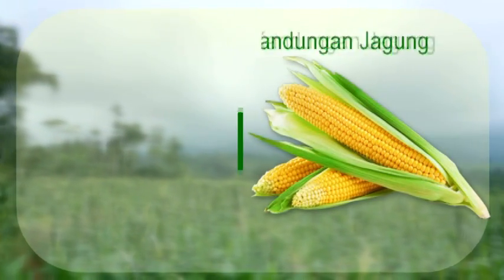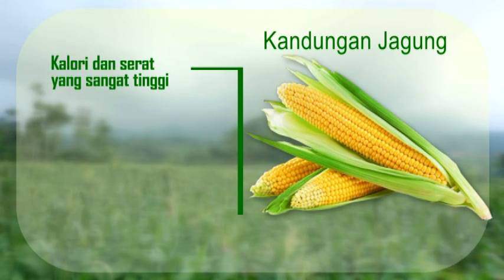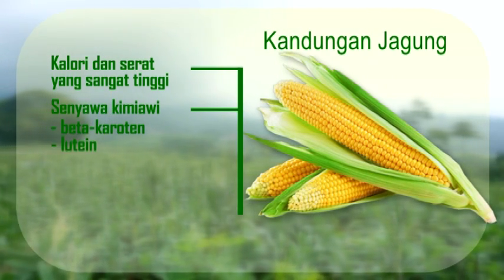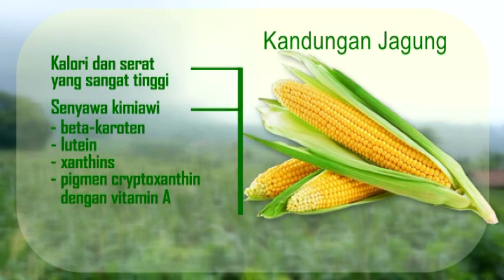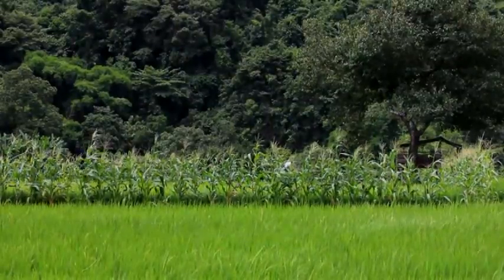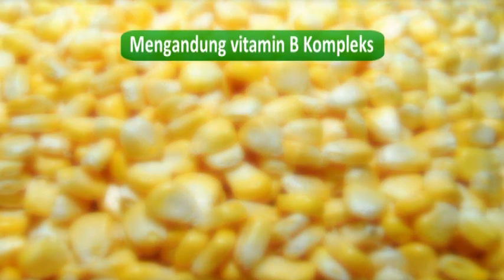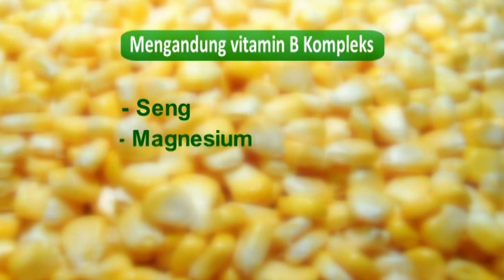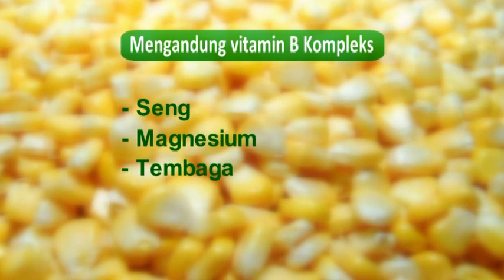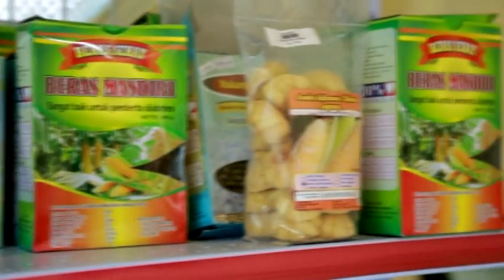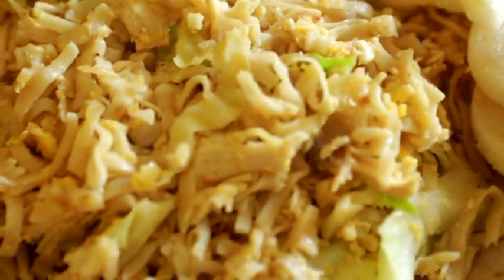Jagung mengandung kalori dan serat yang sangat tinggi. Jagung juga mengandung senyawa kimiawi penting seperti beta-karoten, lutein, xanthin, dan pigmen kriptosantin dengan vitamin A. Jagung juga mengandung vitamin B kompleks dan kaya akan mineral yang sangat penting bagi tubuh seperti seng, magnesium, tembaga, besi, dan mangan. Panganan berbahan dasar jagung mengandung protein dan nutrisi yang dapat memberikan banyak manfaat bagi tubuh, terutama sebagai antioksidan.